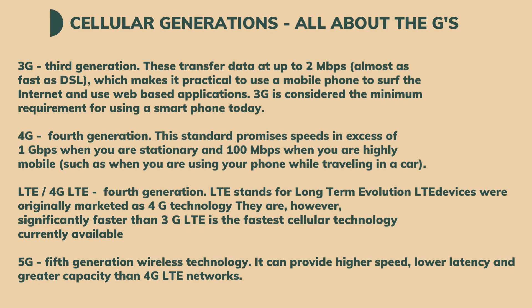Cellular generations — all about the Gs. 3G, third generation. This transfers data at up to 2 Mbps, almost as fast as DSL, which makes it practical to use a mobile phone to surf the internet and use web-based applications.